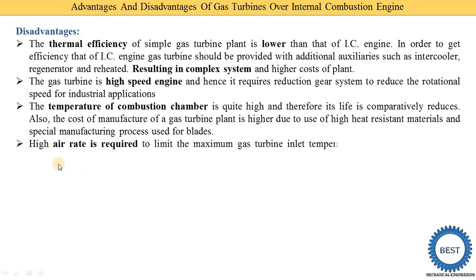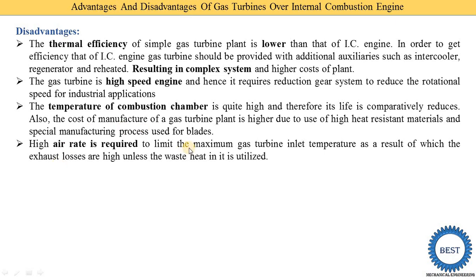A high air flow rate is required to limit the maximum gas turbine inlet temperature. As a result, exhaust losses are high unless the waste heat is utilized. More air is used to reduce combustion chamber temperature, but supplying this excess air increases exhaust losses — unless the exhaust gases are used for process heating or other applications.